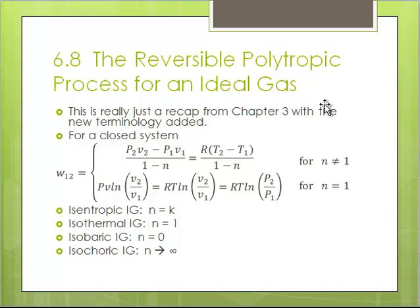What about just polytropic processes in general? We did this in Chapter 3. This is a slide out of that chapter, but we're just adding new terminology. The work for a polytropic process is P₂V₂ - P₁V₁ over 1-n, or if it's an ideal gas, it's R times T₂ - T₁.